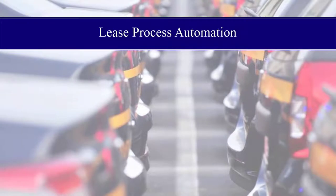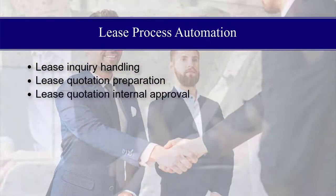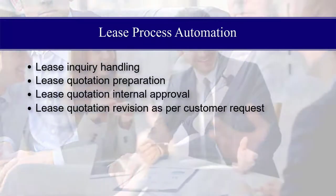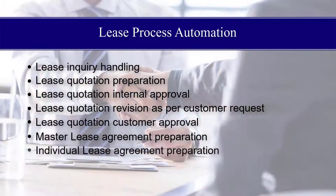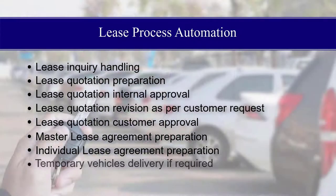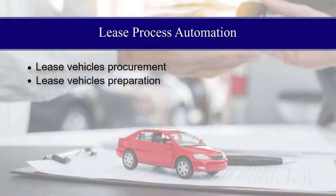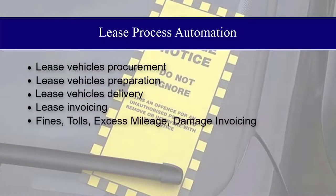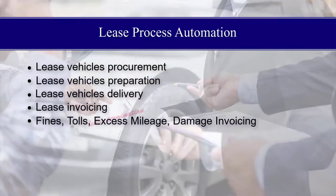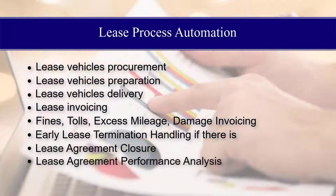The Leasing Process Automation flow includes: Lease Inquiry Handling, Lease Quotation Preparation, Lease Quotation Internal Approval, Lease Quotation Revision as per customer request, Lease Quotation Customer Approval, Master Lease Agreement Preparation, Individual Lease Agreement Preparation, Temporary Vehicles Delivery if required, Lease Vehicles Procurement, Lease Vehicles Preparation, Lease Vehicles Delivery, Lease Invoicing, Fines, Tolls, Excess Mileage, and Damage Invoicing, Early Lease Termination Handling, Lease Agreement Closure, and Lease Agreement Performance Analysis.